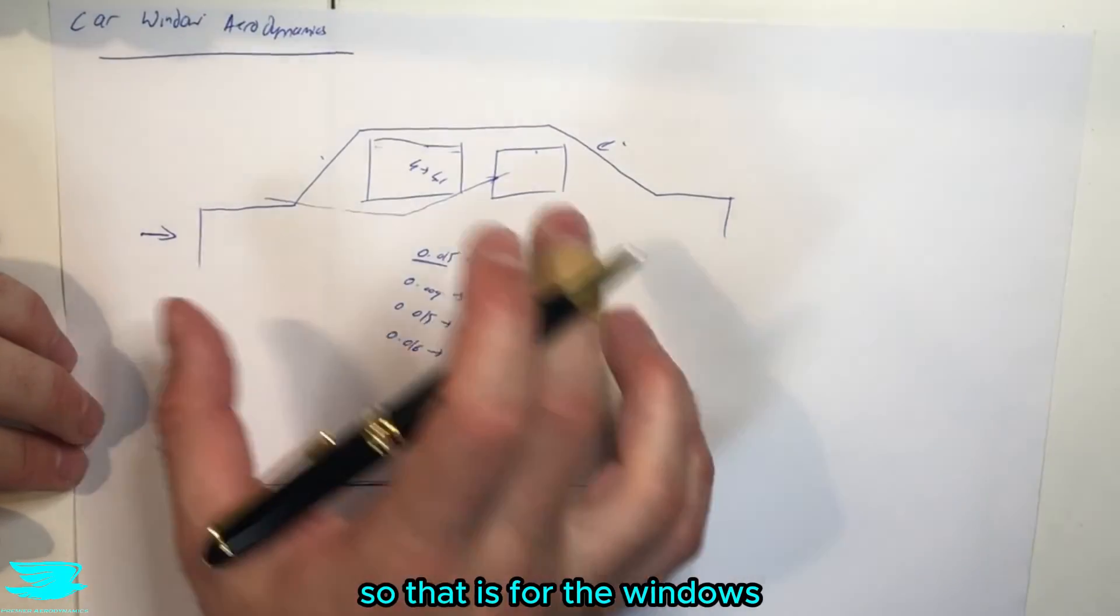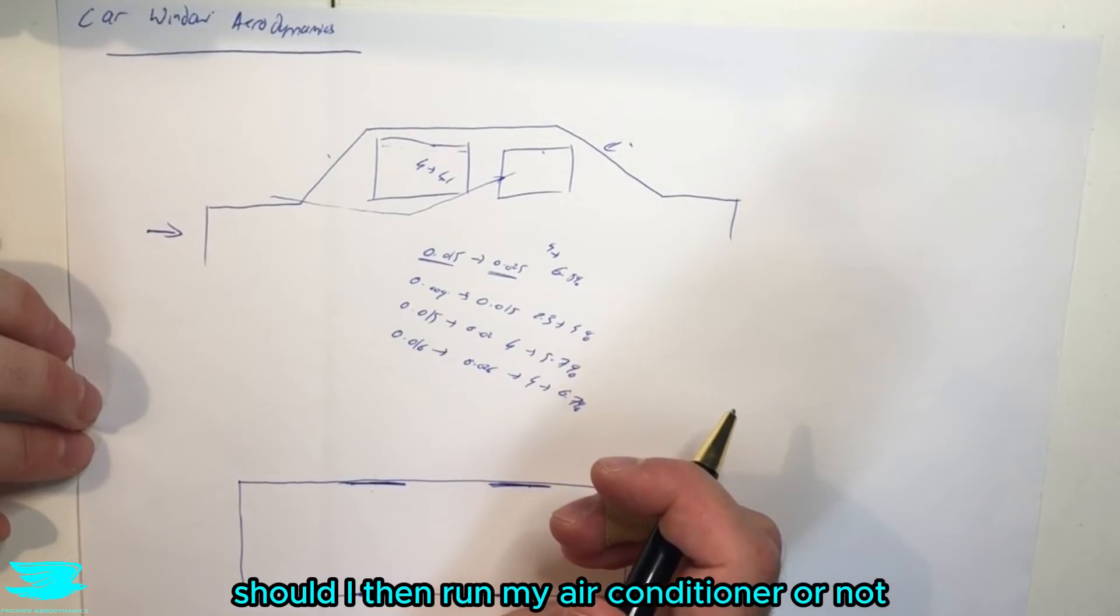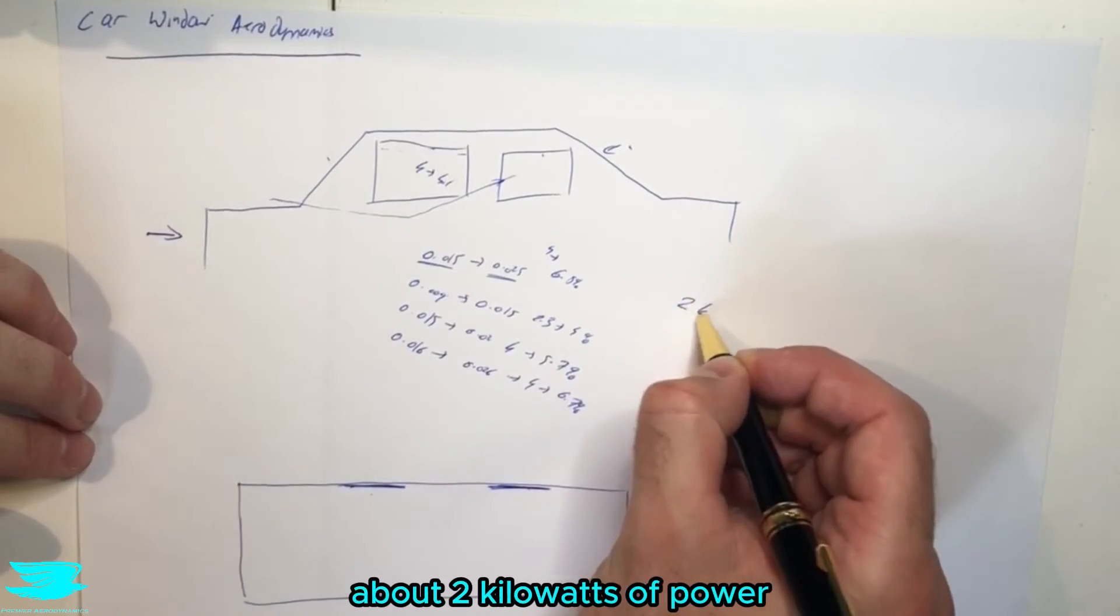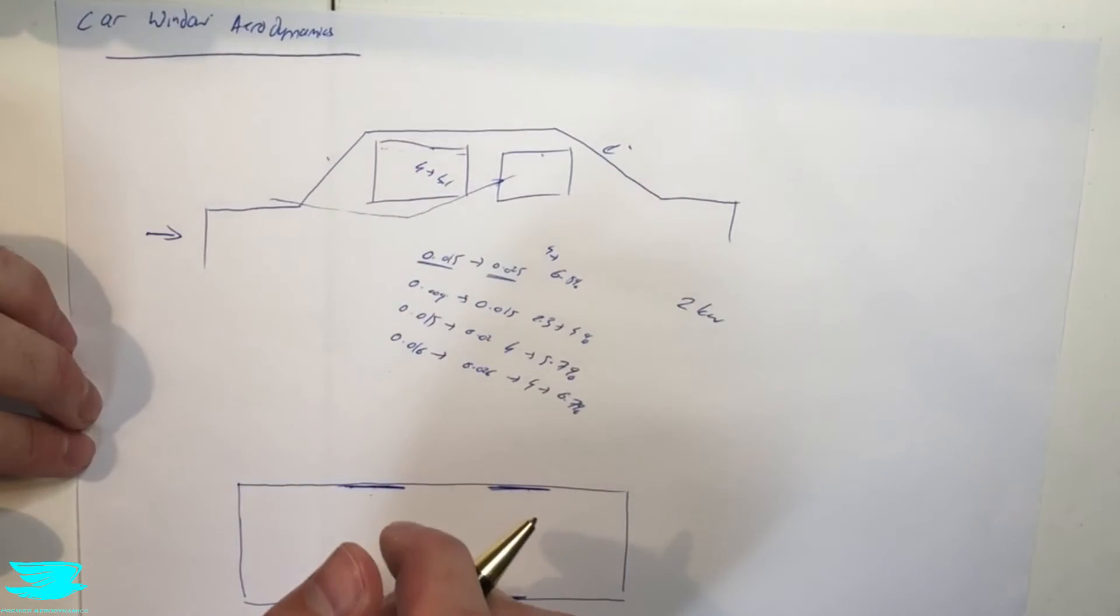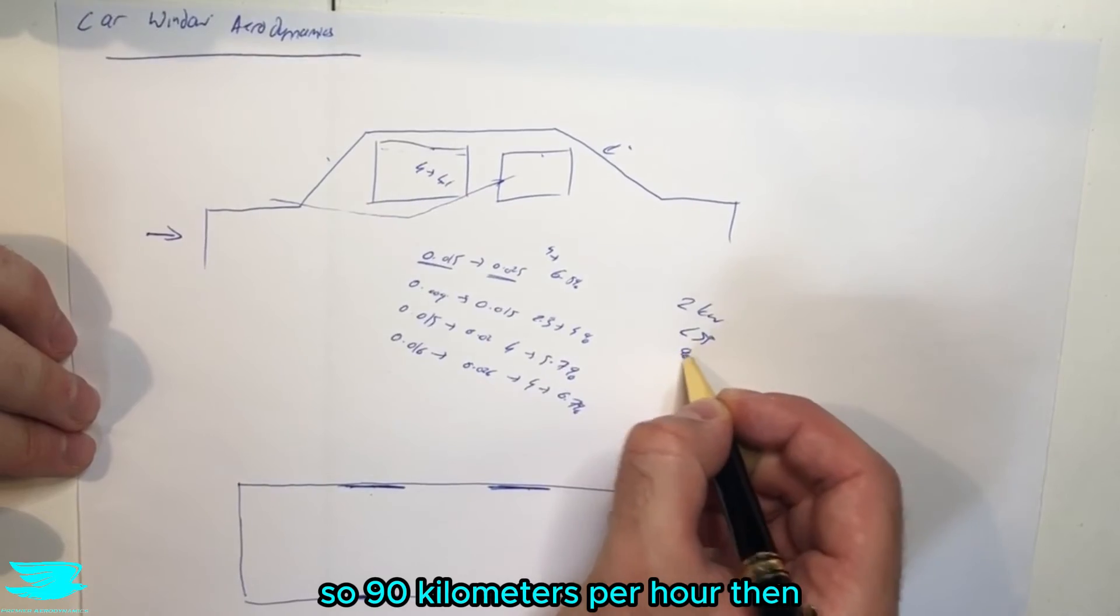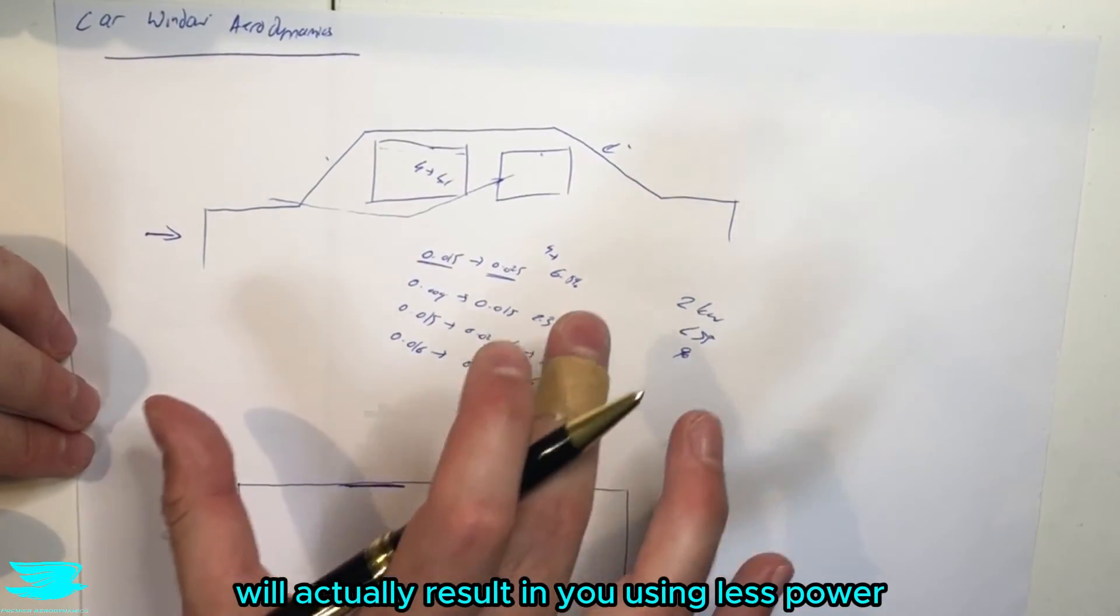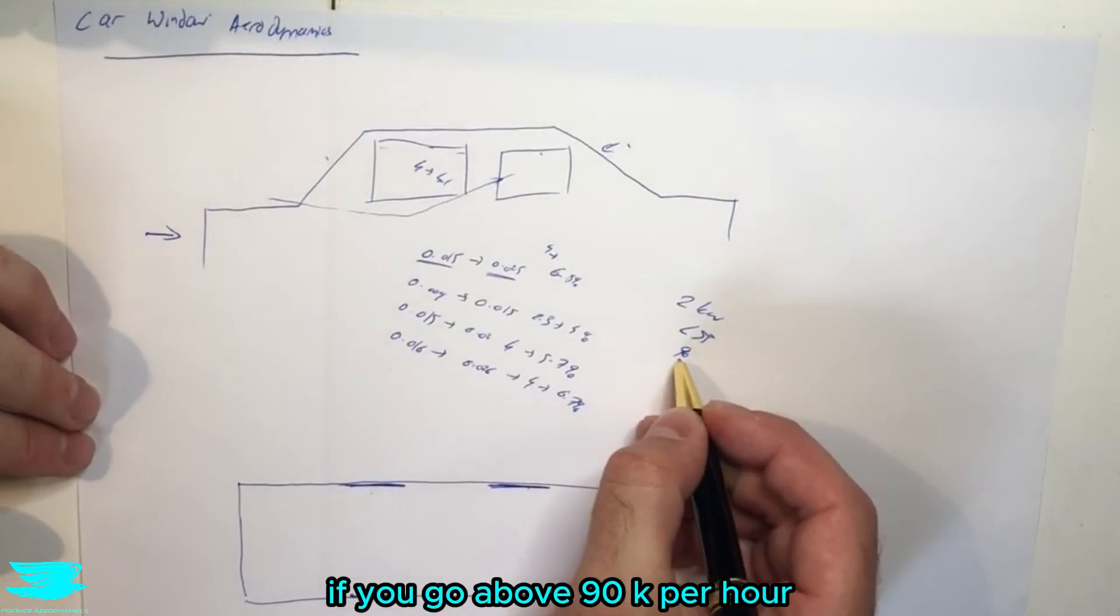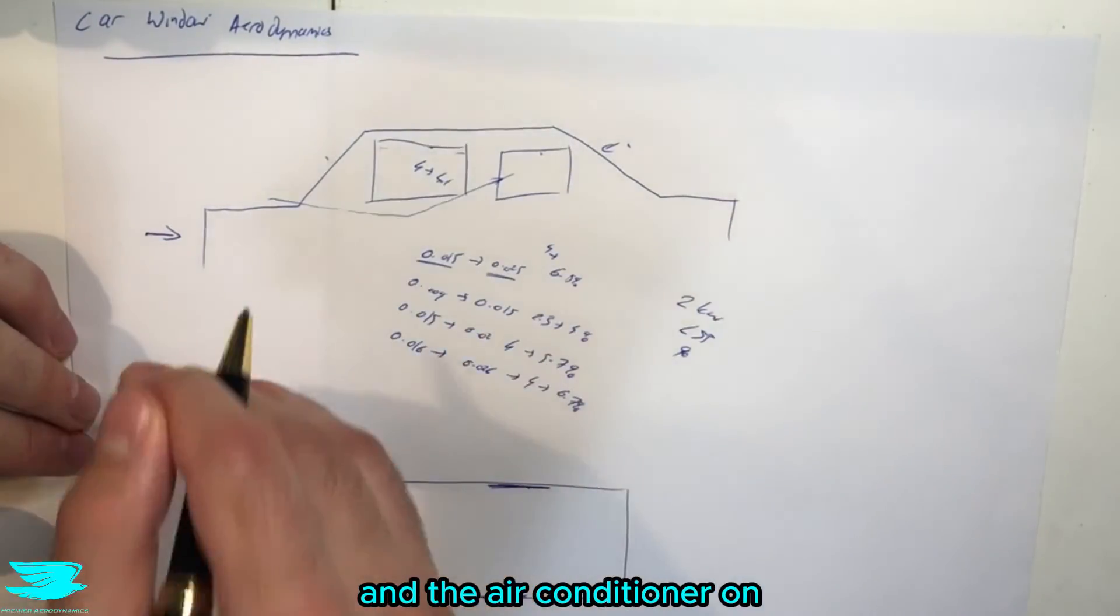So that is for the windows. The question then becomes, should I run my air conditioner or not? Or should I have my windows open? Well, generally speaking, an air conditioner uses about two kilowatts of power around about that. Having all your windows open, as long as you're below about 55 miles per hour, so 90 kilometers per hour, then having the windows open will actually result in you using less power by having the windows open than having the air conditioner on. If you go above 90 kilometers per hour, 55 miles per hour, then you should usually have the windows closed and the air conditioner on.